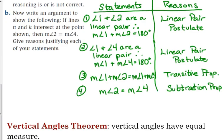Since we've established that angle 1 equals angle 3 and angle 2 equals angle 4, we can use what we call the vertical angles theorem. The difference between a postulate and a theorem is that a theorem can be proven — we just proved that these vertical angles are congruent for both pairs. A postulate is an assumption we make; the linear pair postulate is essentially a definition. Going forward, we can use the vertical angles theorem as a reason in our proofs.